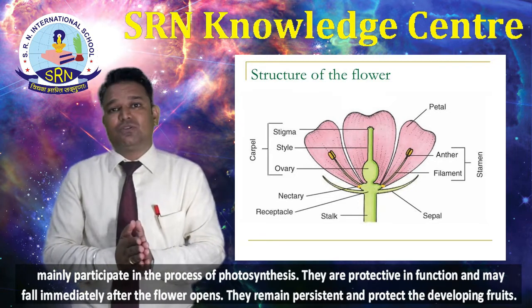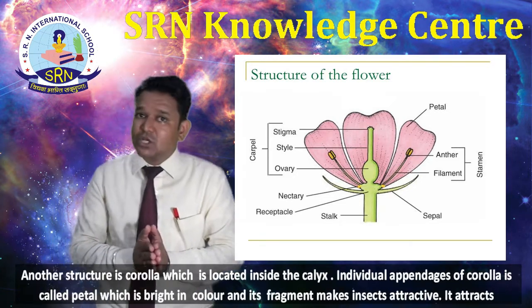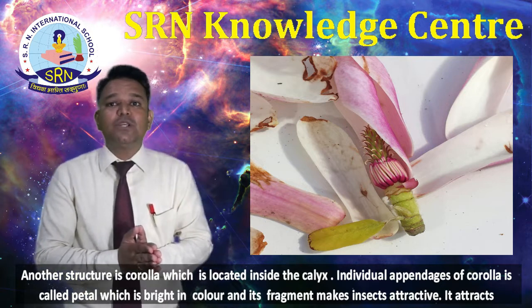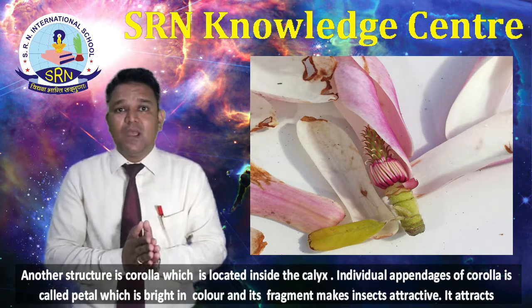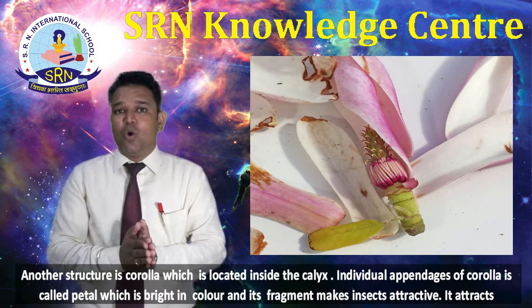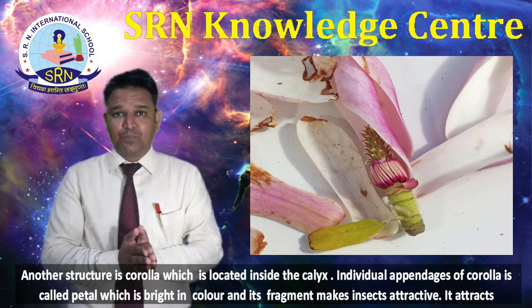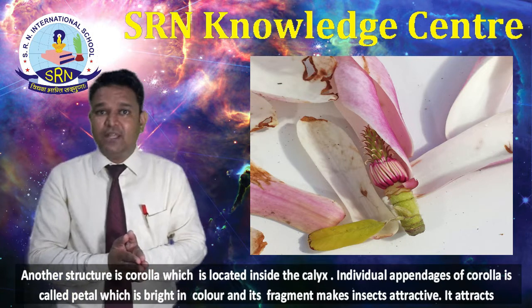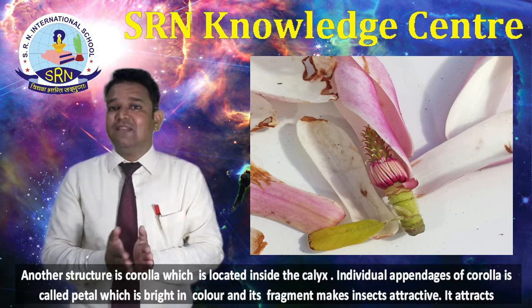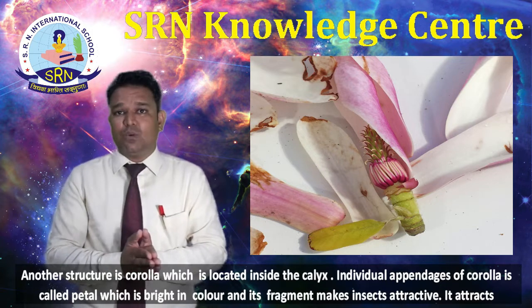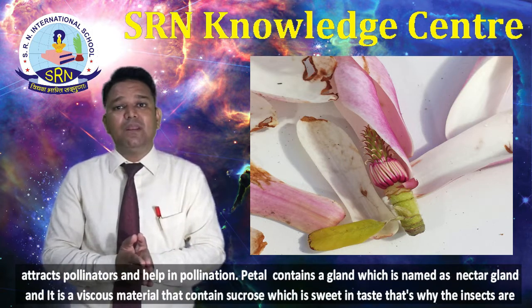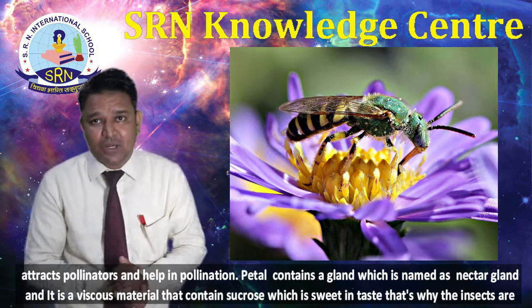The persistent sepals protect the developing fruits. Another structure is the corolla, which is located inside the calyx. The individual appendages of corolla are called petals, which are bright in color and their fragrance makes insects attractive — they attract pollinators and help in pollination.